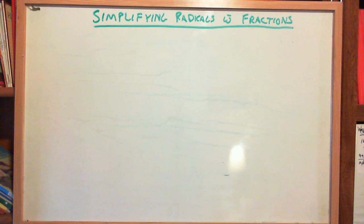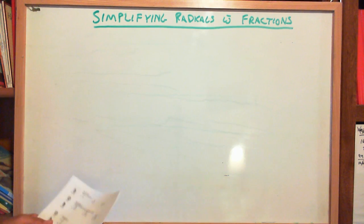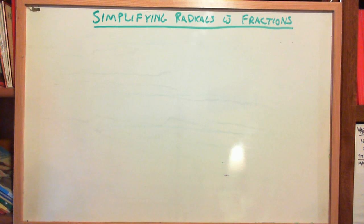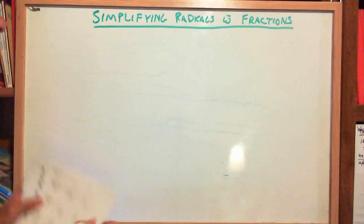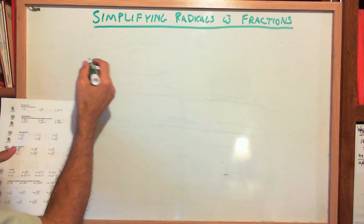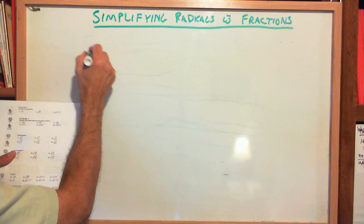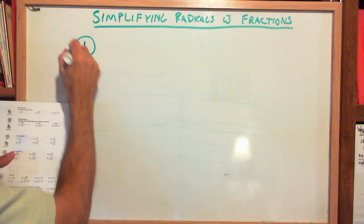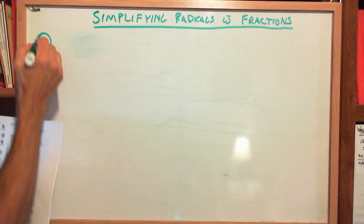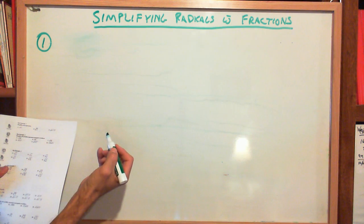I'm going to do a quick lecture on simplifying radicals with fractions. I'm going to hold off until the end before I actually do rationalizing the denominator, because right now we just want to look at patterns and look at things that might be helpful to us. So we'll start here.